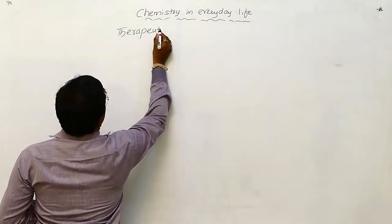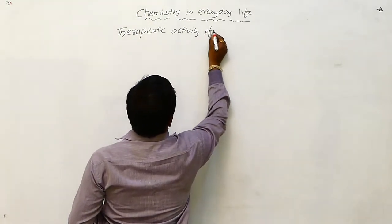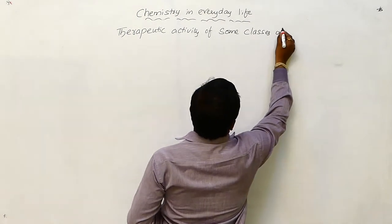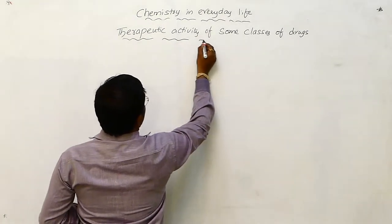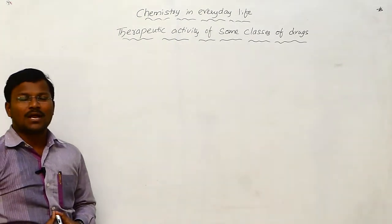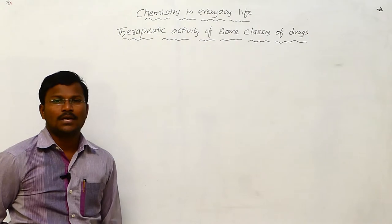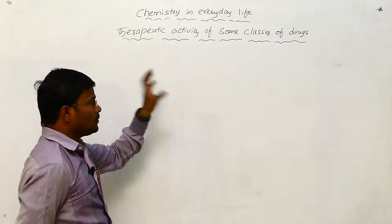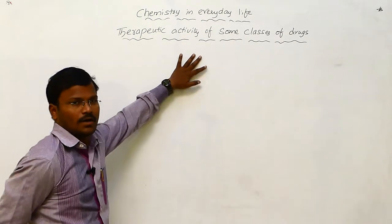We have to learn about the therapeutic activity of some classes of drugs. This can be based on molecular targets, drug action, chemical structure, and also based on pharmacological activity. Especially based on pharmacological activity, the drugs are named in different manners, so we have to learn what the therapeutic activity of such classes of drugs are.